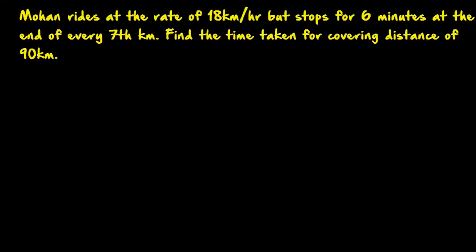Hi friends, welcome to today's class. Today's question is: Mohan rides at the rate of 18 km per hour but stops for 6 minutes at the end of every 7 km. Find the time taken for covering a distance of 90 km.